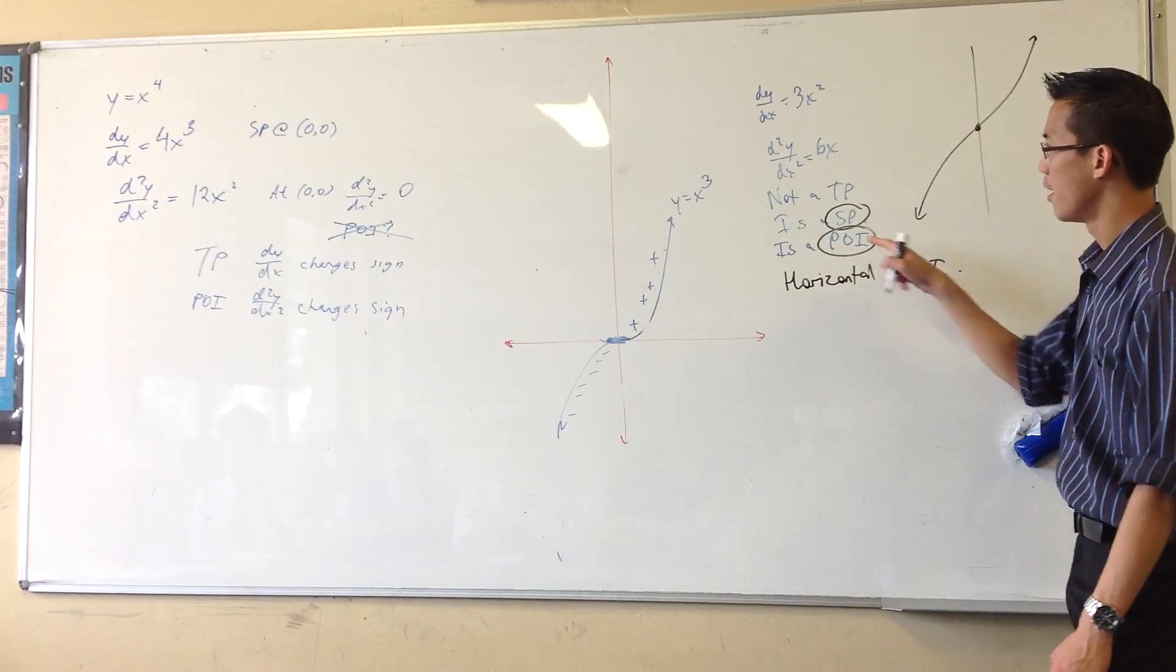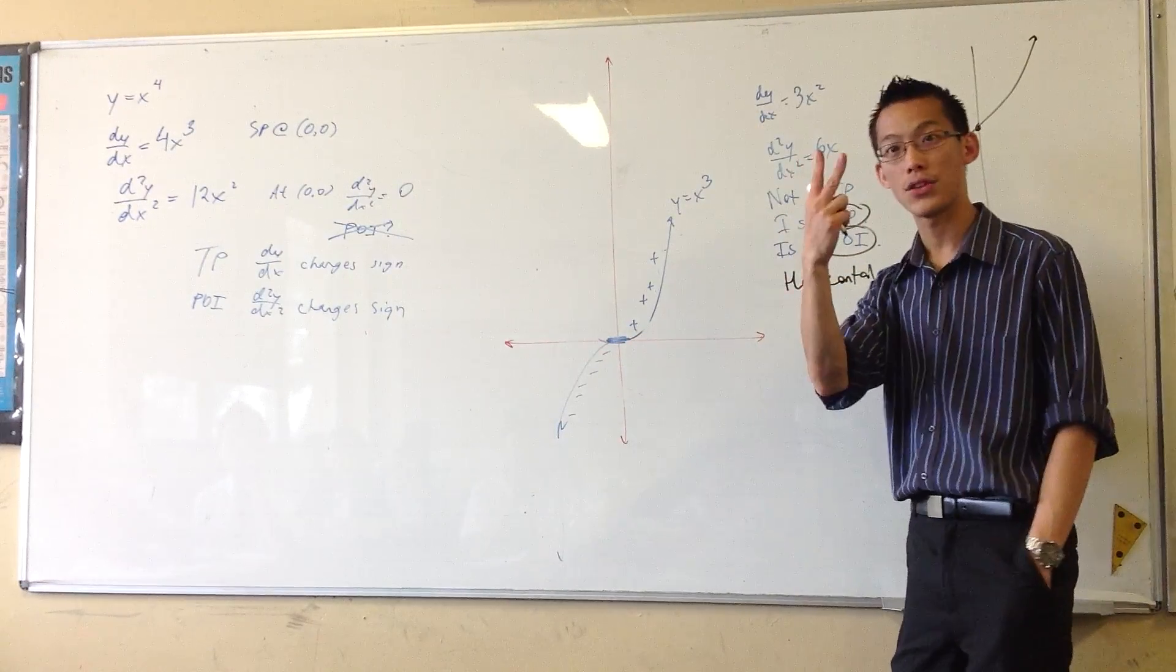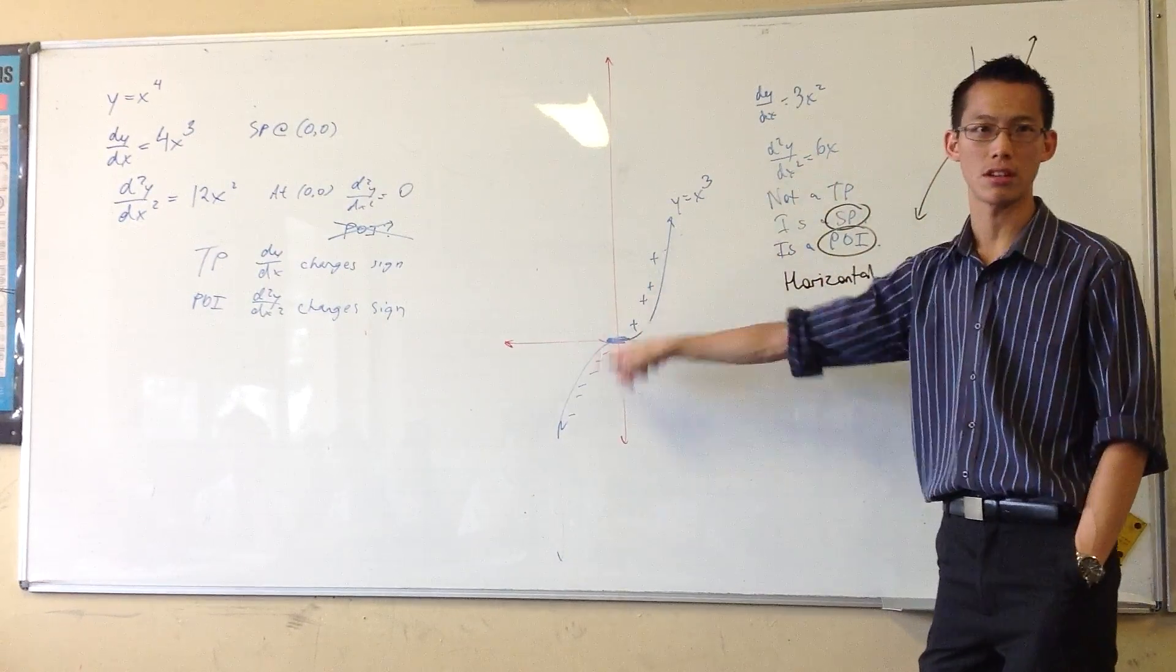So, first derivative is zero because it's horizontal. Second derivative is zero because you have the changing concavity, okay?